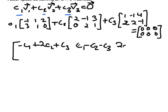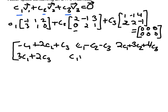First row, third column: 2C1 plus 3C2 plus 4C3. Moving to the second row, first column: 3 times C1 plus 0 times C2 plus 2 times C3. Then the second row, second column: 1 times C1 plus 2 times C2 plus 2 times C3.